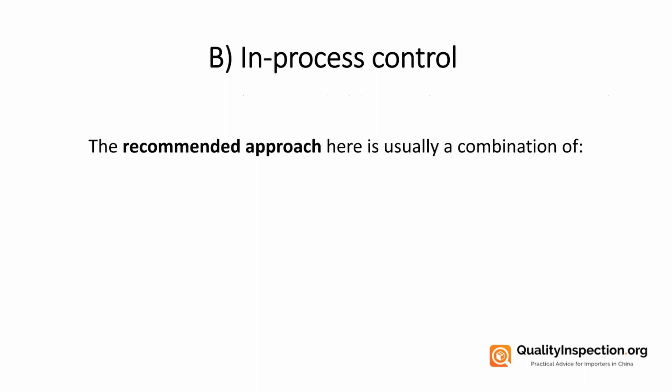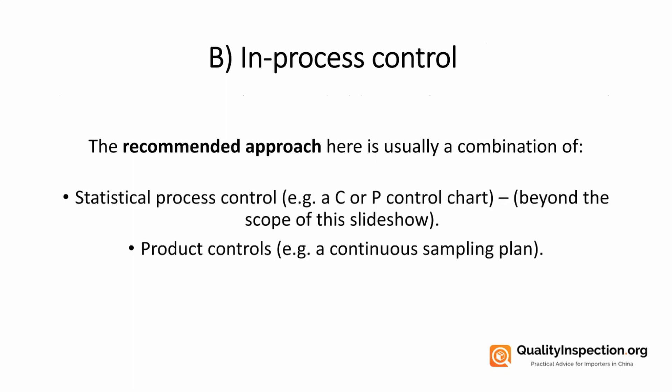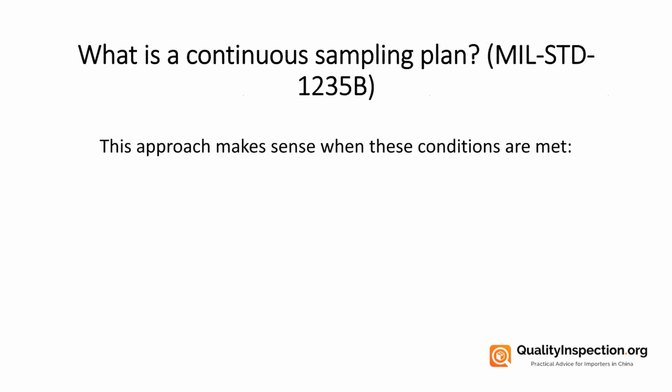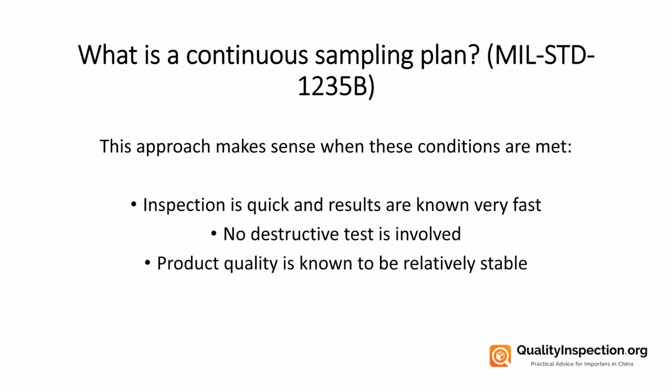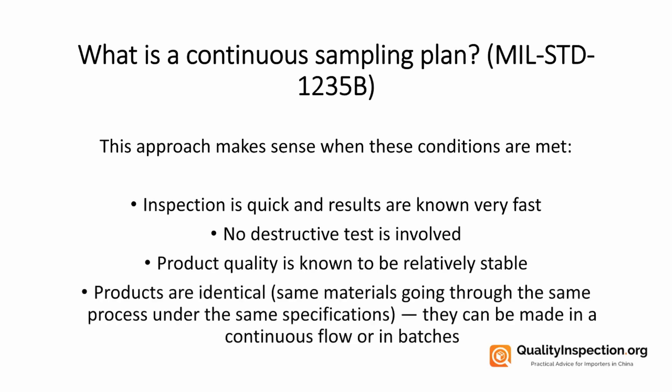Second is in-process control. The recommended approach for manufacturers is usually a combination of statistical process control — a C or P control chart — or product controls such as a continuous sampling plan (MIL-STD 1235B). This approach makes sense when: the inspection is quick and results are known very quickly, no destructive tests are involved, product quality is known to be relatively stable, and products are identical — meaning the same materials going through the same process under the same specifications, whether made in continuous flow or in batches.